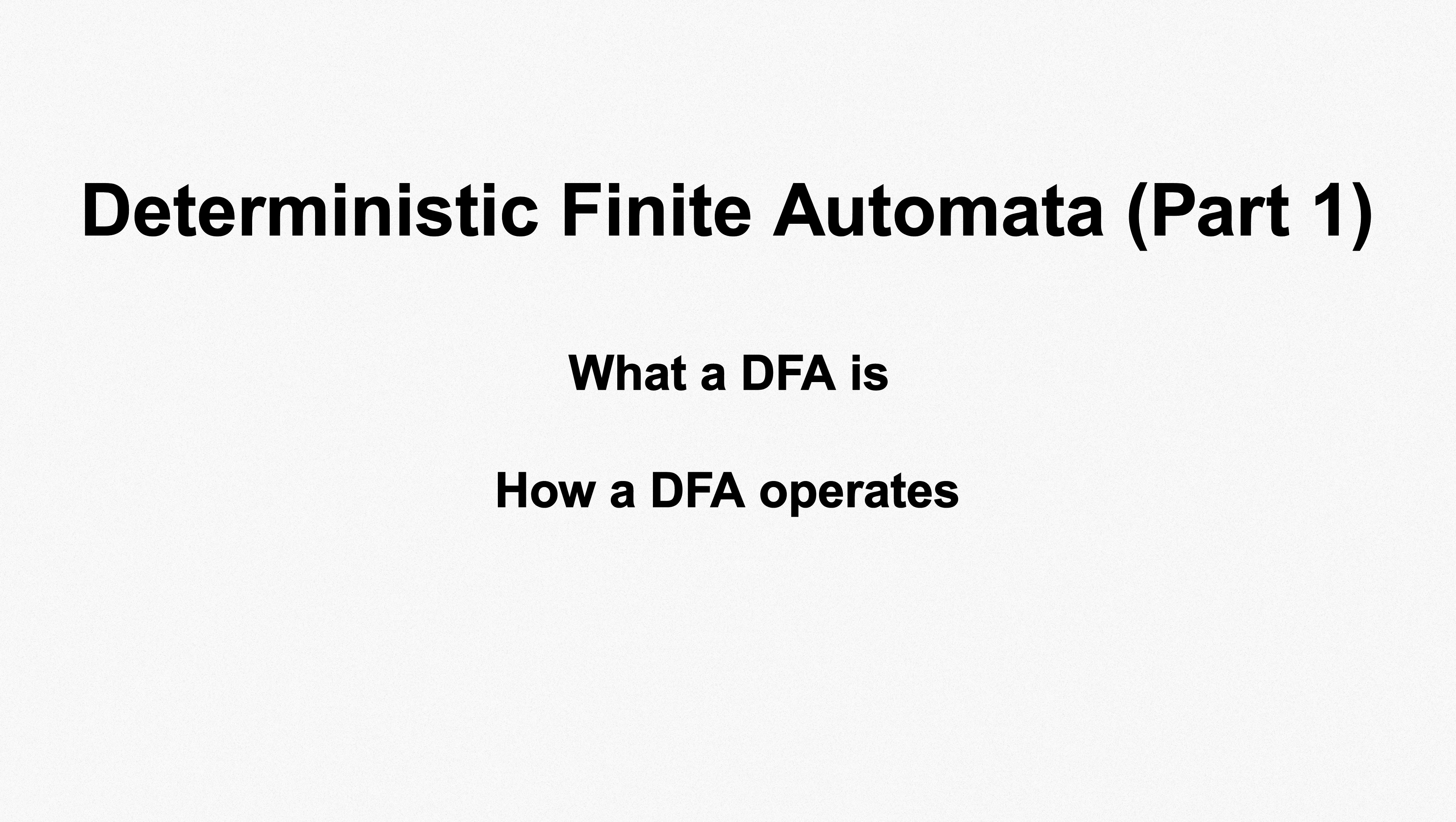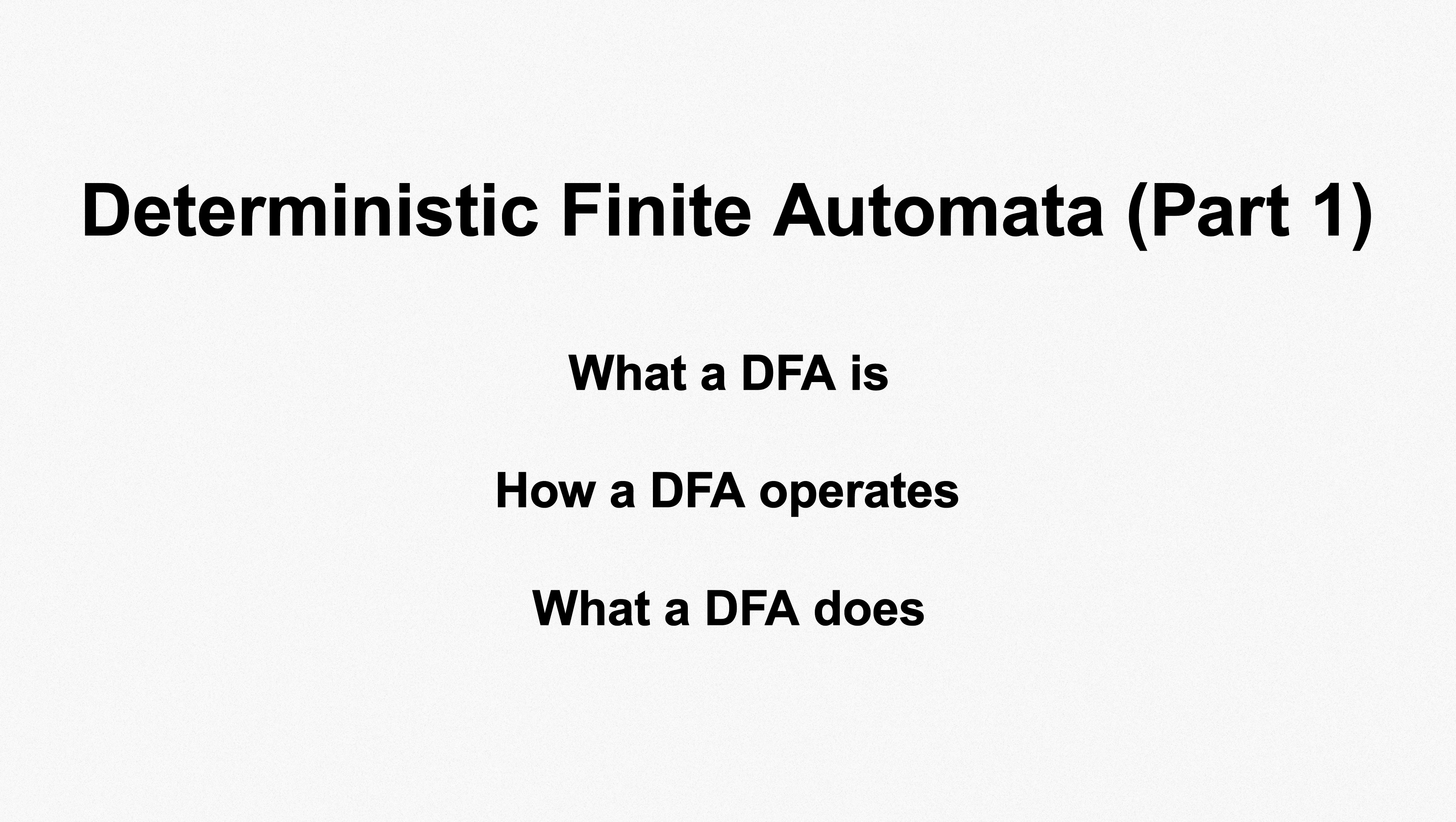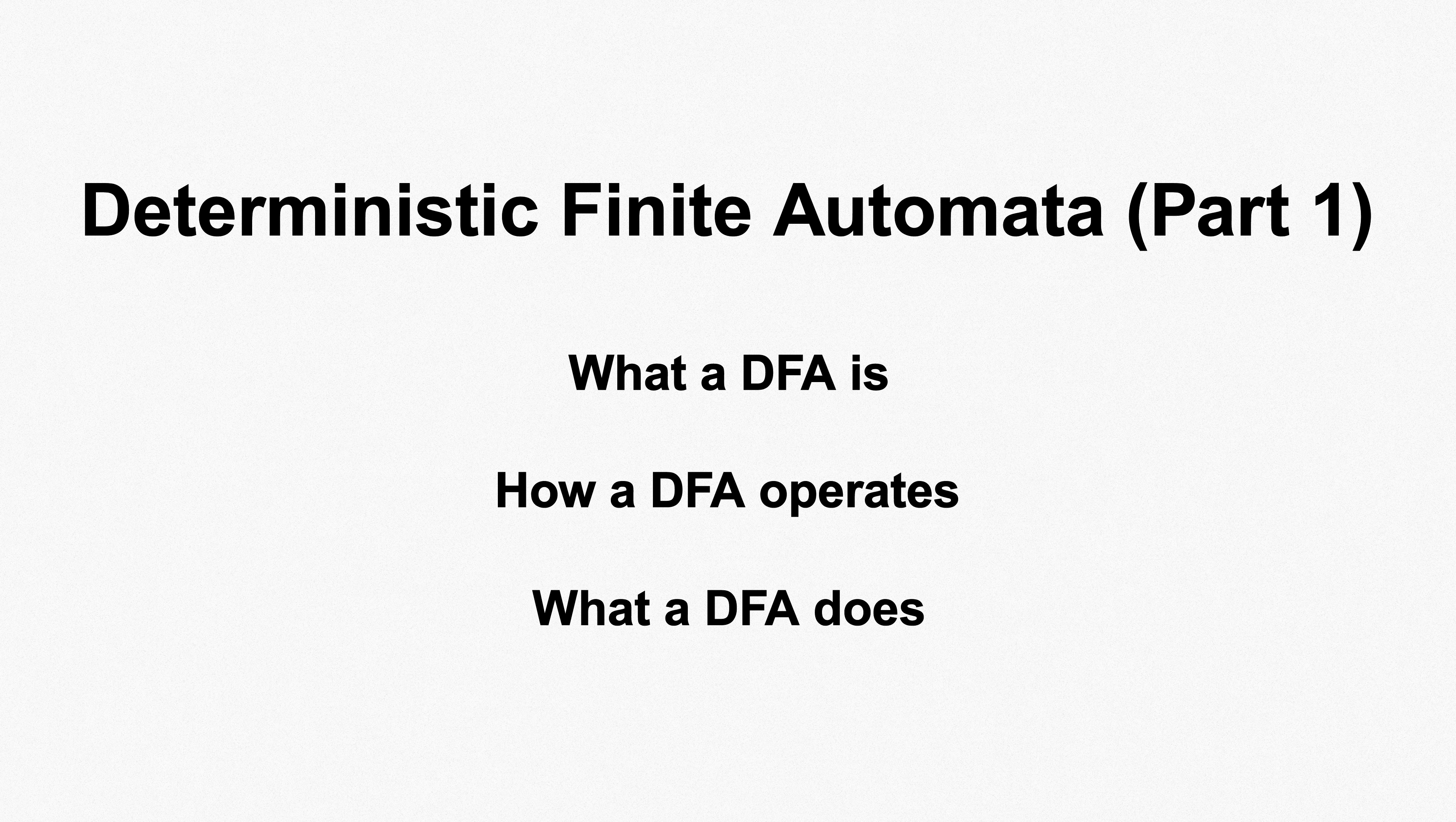That's it for this brief introduction to deterministic finite automata. We've seen how a DFA is constructed, how it runs, and that each DFA accepts some set of strings, or alternatively, answers some yes-no question about strings. We'll come back to DFA soon after we work a bit more with sets of strings, which is coming up next.